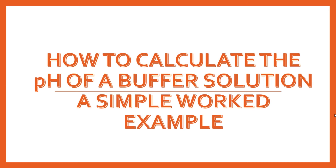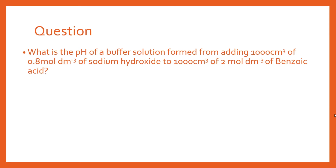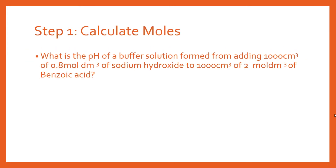In this video I'm going to teach you how to calculate the pH of a buffer solution, and we're going to run through a simple worked example step by step. Our question is: what is the pH of a buffer solution formed from adding 1,000 cm³ of 0.8 mol/dm³ of sodium hydroxide to 1,000 cm³ of 2 mol/dm³ of benzoic acid? Let's start with the first step: calculating the number of moles.